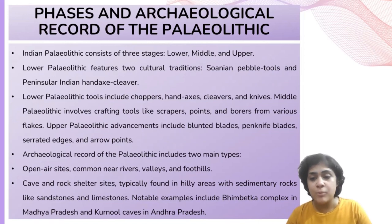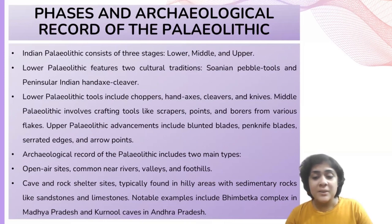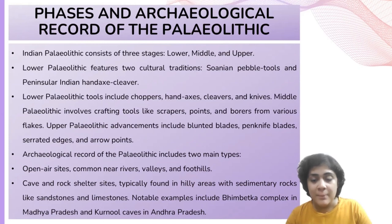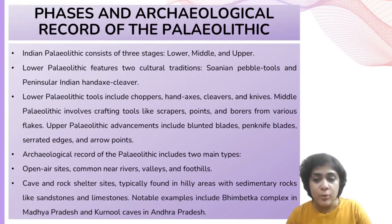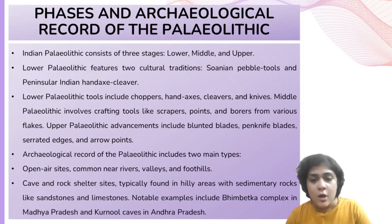The Middle Paleolithic involves the creation of tools like scrapers, points, and borers. The Upper Paleolithic represents a more advanced stage with refined implements like blunted blades, penknife blades, blades with serrated edges, and arrow points. These tools are fashioned from long parallel-sided blades struck in a series from cylindrical cores using a punch technique.